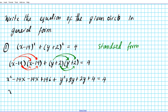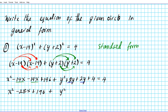Now let's simplify. We have X squared; combining negative 14X and negative 14X gives negative 28X, plus 196. For the Y terms: Y squared, positive 2Y plus 2Y gives plus 4Y, plus 4.